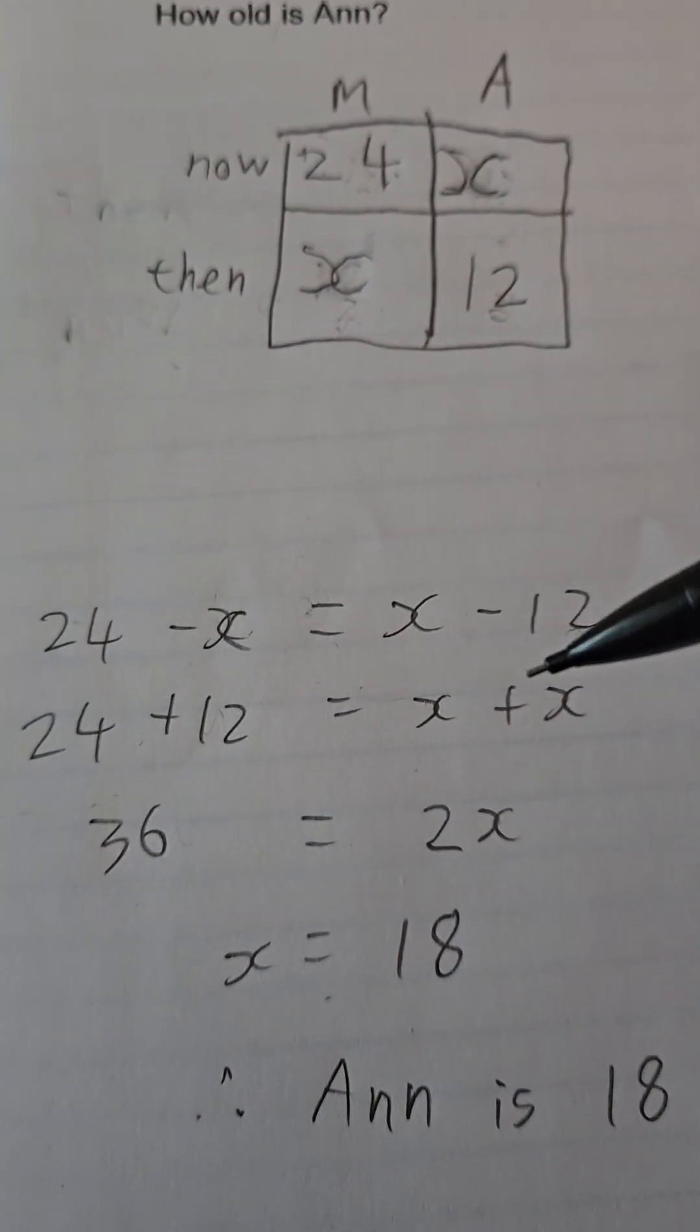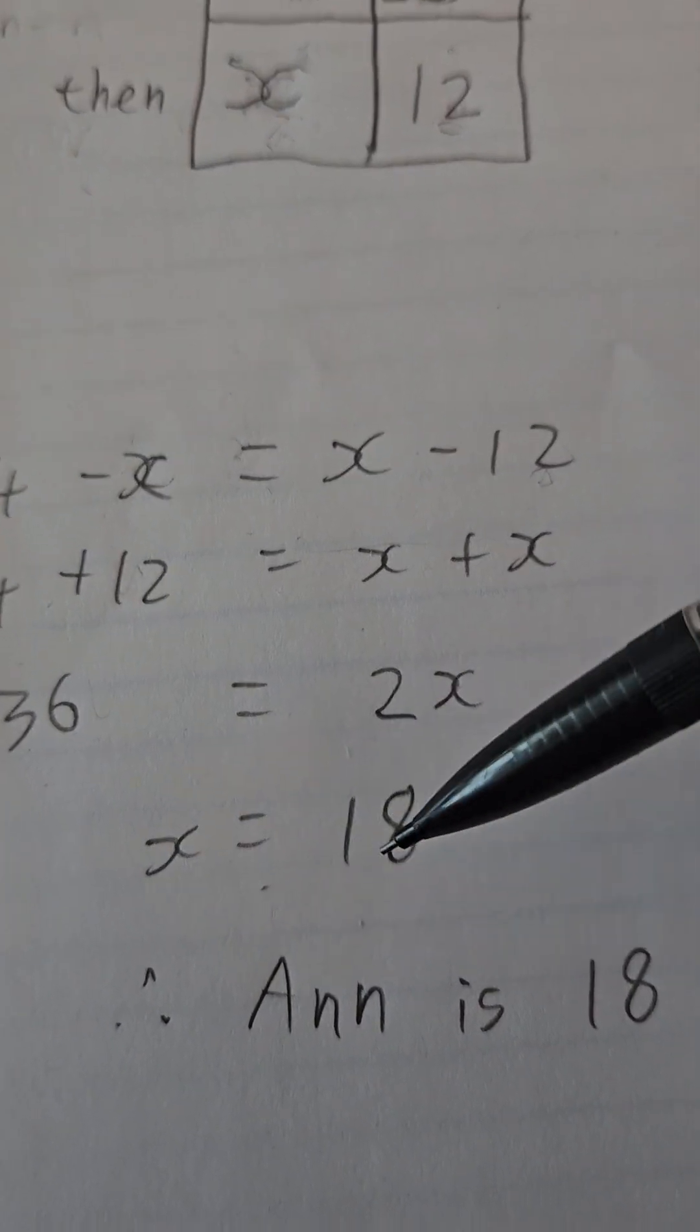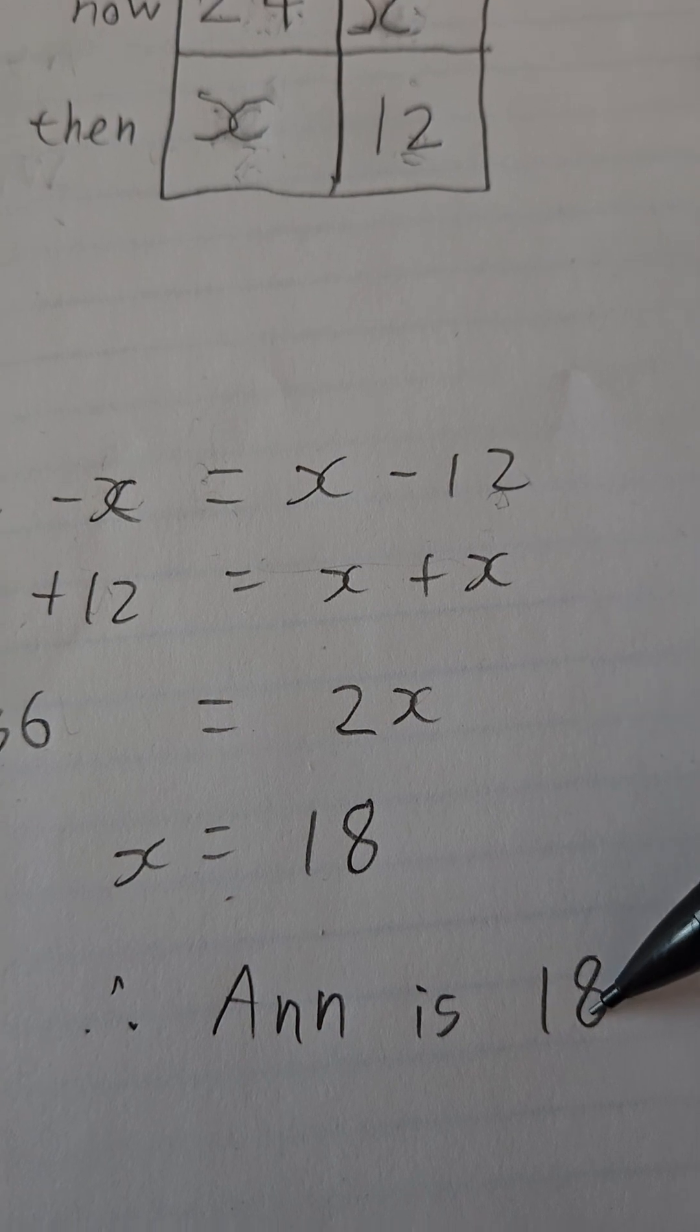So 24 plus 12 equals x plus x. Therefore 36 equals 2x. x equals 18. Anne is 18.